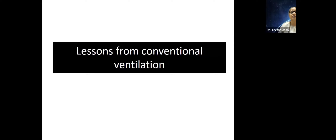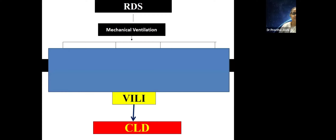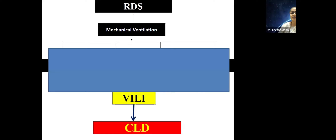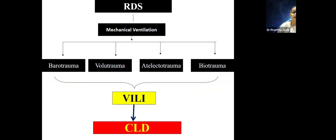Before we go forward, I want to revisit conventional ventilation, which has helped us a lot. Most of the time we do use conventional ventilation only, but we have to remember there are some issues with it. We face barotrauma because of high pressures, volutrauma because of volume effects, atelectrauma because of atelectasis itself, and biotrauma because of inflammatory mediators secreted when a child is on a ventilator. Together, we call them ventilator-induced lung injury.